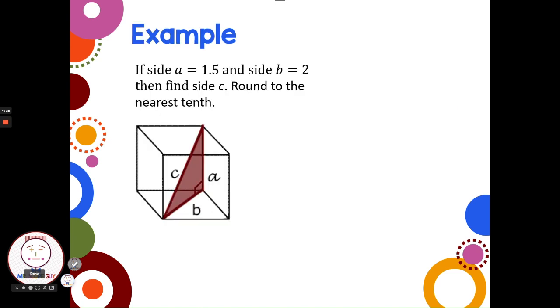Let's say we have a prism here, and the right triangle is drawn. If side a is 1.5 and side b is 2, find side c, round to the nearest tenth. So are we missing a leg or a hypotenuse? We are missing the hypotenuse. So we start with a squared plus b squared equals c squared, the Pythagorean theorem.